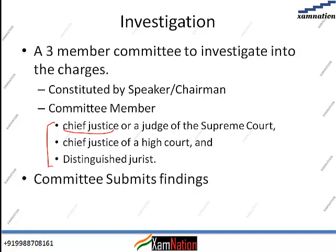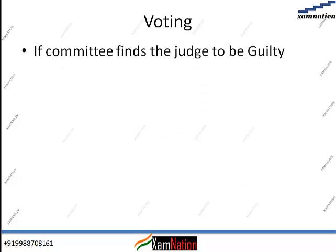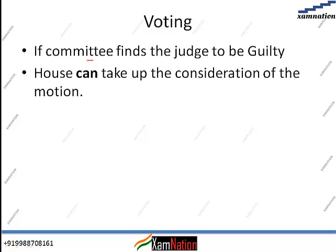After the committee submits its findings, if the finding says that the particular judge is guilty, then the next step follows. If the finding says the judge is not guilty, then the impeachment motion goes into the garbage — it ends there. If the committee finds the judge guilty, the house can take up the consideration of the motion. Voting in both houses will then happen.